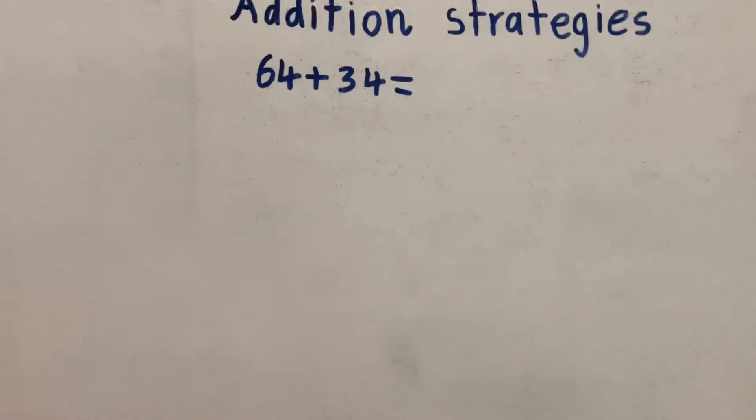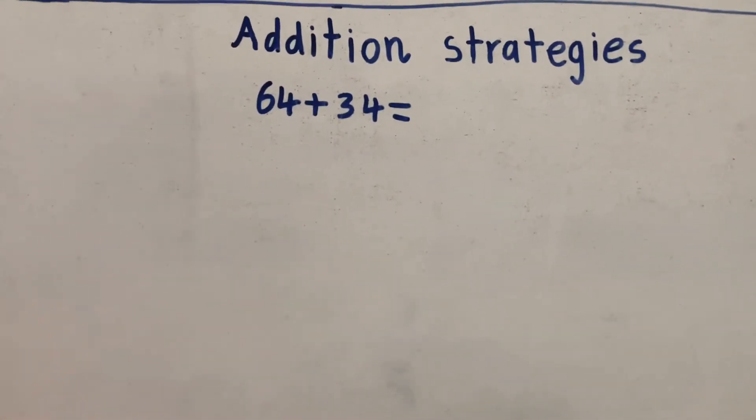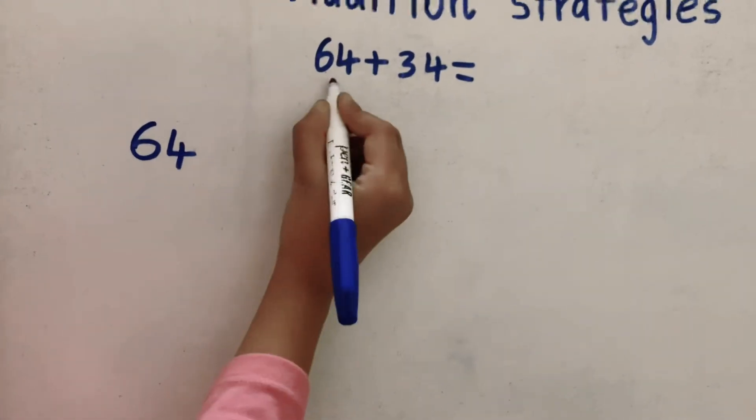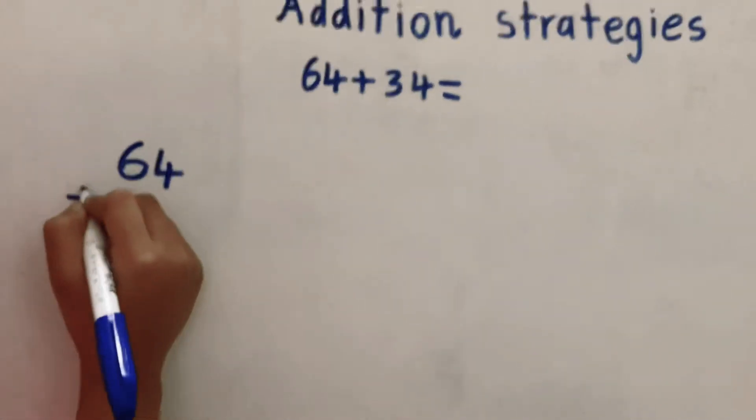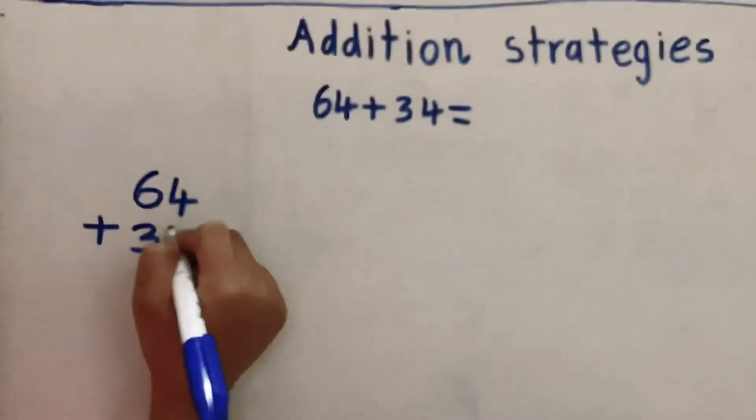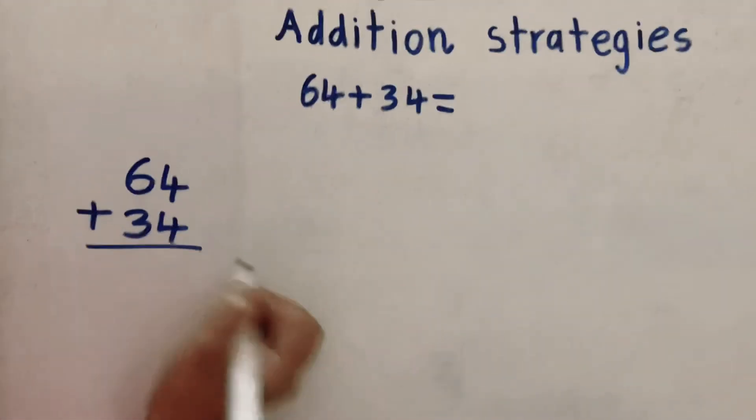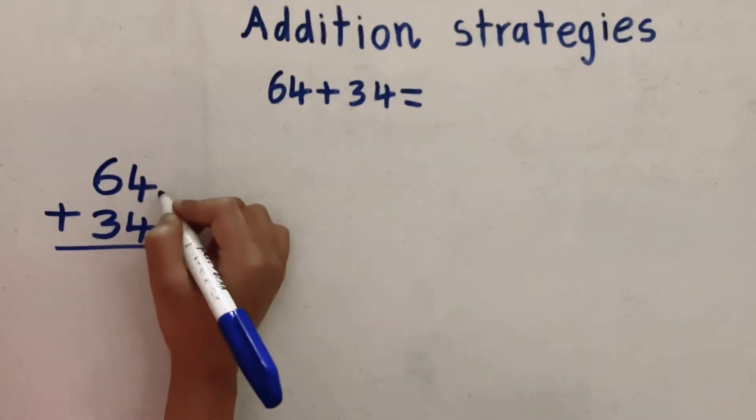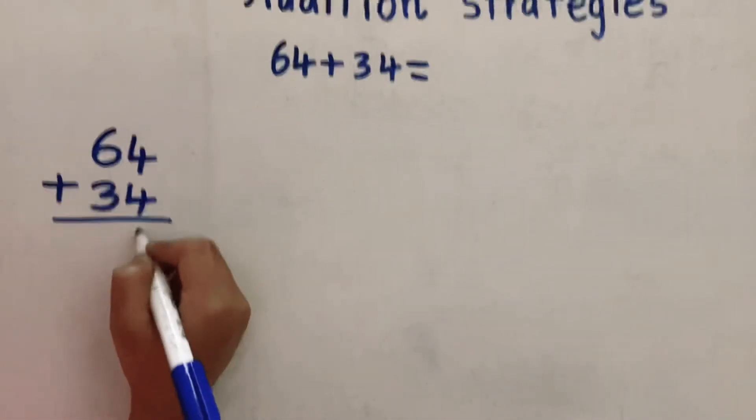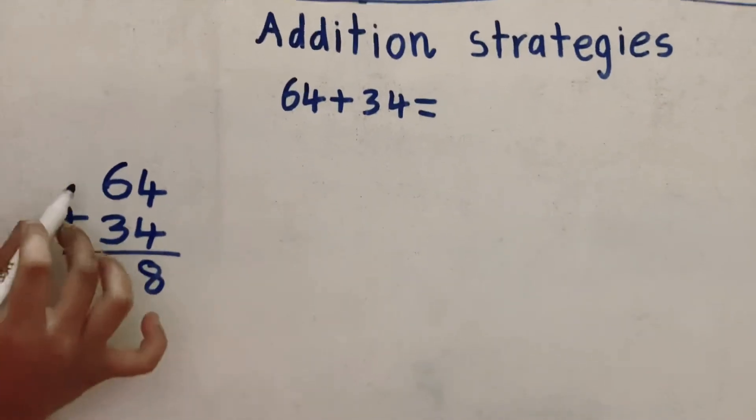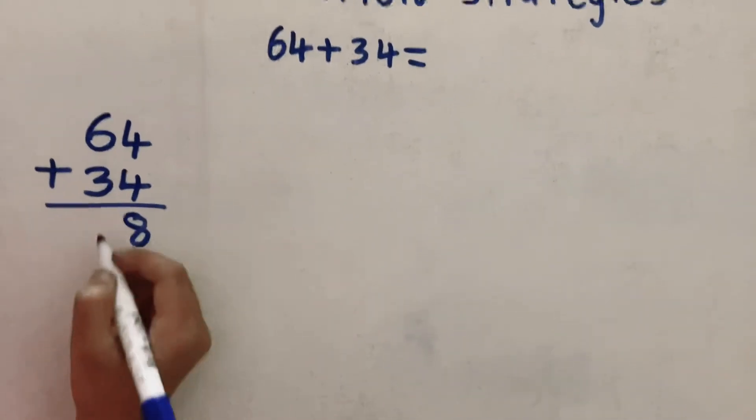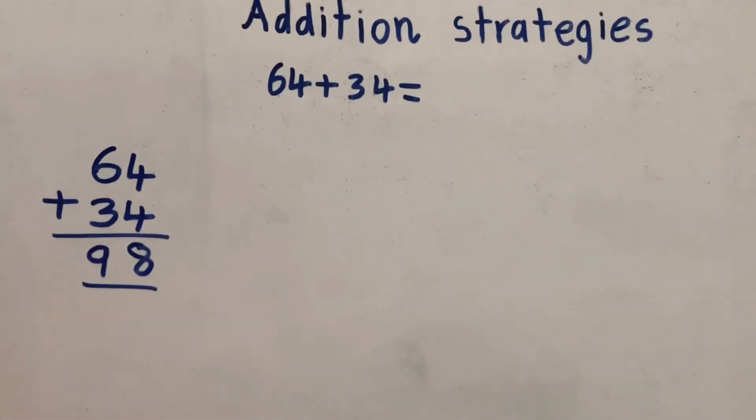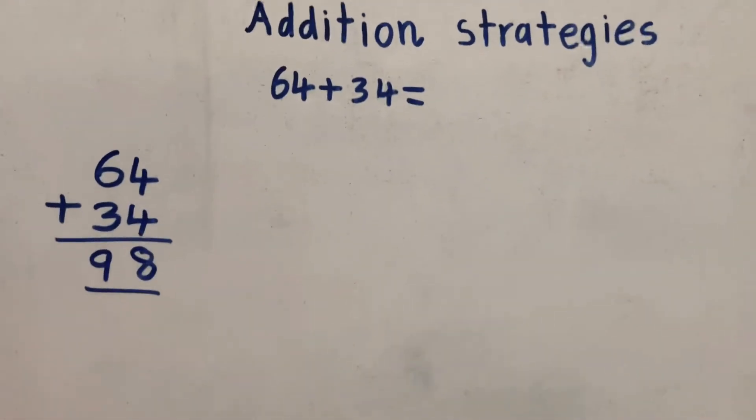So another strategy is the vertical way. So this is how you do it. 64, which is our number over here, plus 34, our number over here. And then you add a little line there. So what you're gonna do is add the 4 and 4 which equals 8 and 6 plus 3 which equals 9. So now we have the same answer like we got for the arrow way too. So that means we're doing a good job.